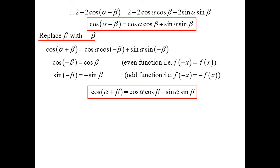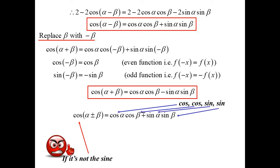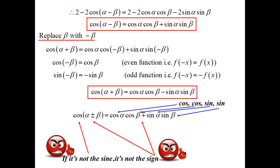These are very similar formulas — the difference is the signs. So cos(α ± β) = cos α cos β ∓ sin α sin β; notice that the sign is different. The way I remember it: for cos(α ± β), the pattern goes cos cos sin sin. And if it's not the sine ratio — it's cosine — then it's not the sine, so the ± becomes ∓. So: cos cos sin sin; if it's not the sine, it's not the sine.